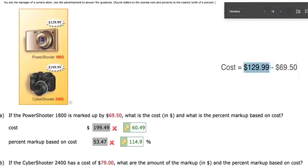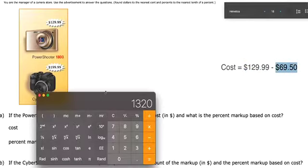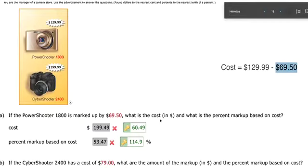So this is how much they're selling it for. If they marked it up by $69.50, then subtracting those two gives us our cost. I think that's what's here, $60.49. And the percent markup based on cost.